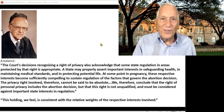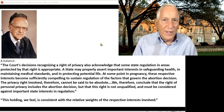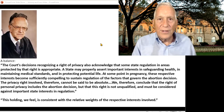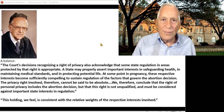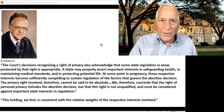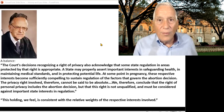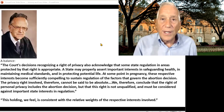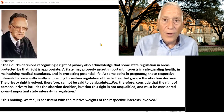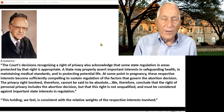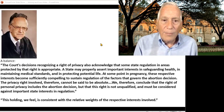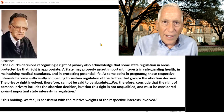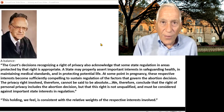They come up with a trimester system. In the first trimester — the first three months of a pregnancy — states can make almost no laws restricting the right to abortion. Louisiana tried to put all sorts of restrictions on abortion in the first three months, and the Supreme Court knocked that down based on Roe v. Wade. In the second trimester, you could have some restrictions, but they had to be reasonable and based on interests like health and medical safety. And in the third trimester, when the fetus is viable and could survive outside of the womb, there's a properly compelling interest in protecting potential life, and if a state wants to restrict abortion in the third trimester, they should constitutionally be allowed to do so.